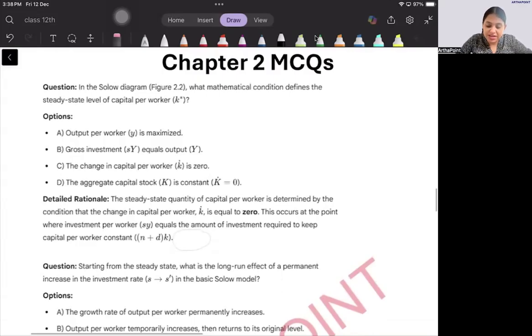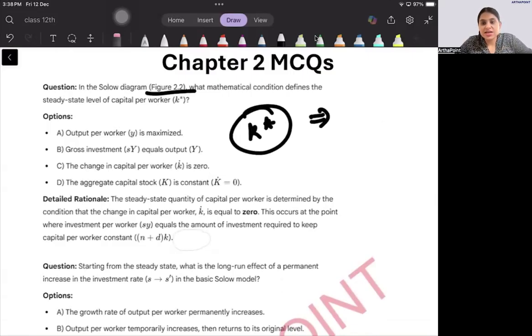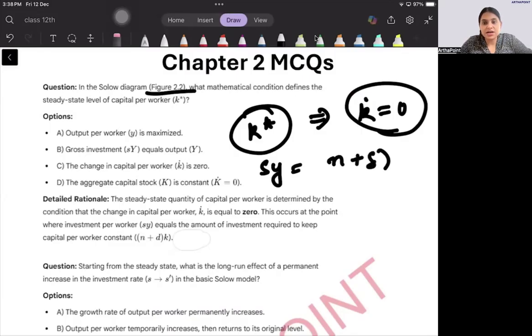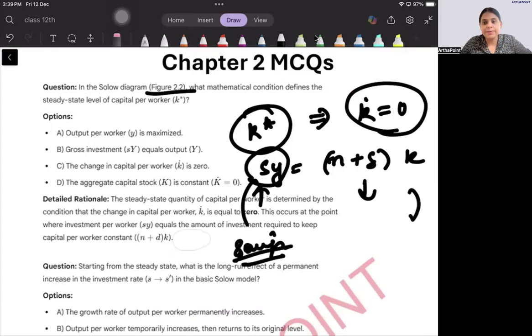In the Solow diagram, I could not make the diagrams here, you have to refer to your book. What mathematical condition defines the steady state? K star is that in which the change in capital is zero. When the change in capital is zero, you have sY is equal to n plus delta K. Capital will increase due to savings, that means investment, and decrease due to depreciation or population growth. So the answer will be output per worker is maximized, C.